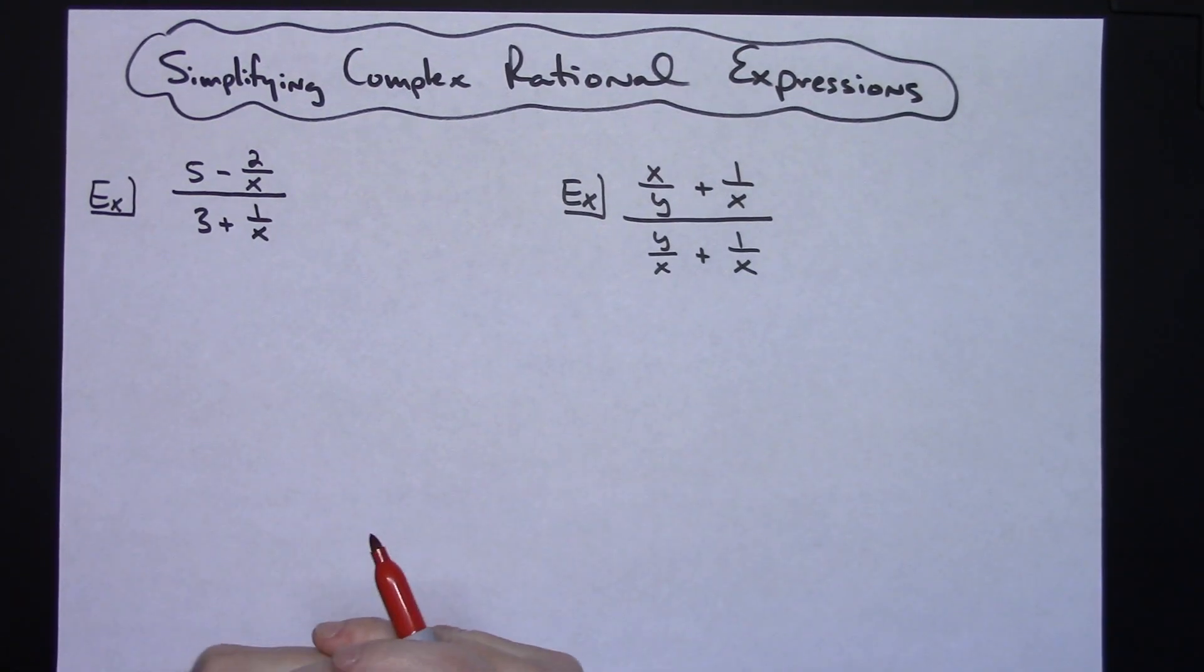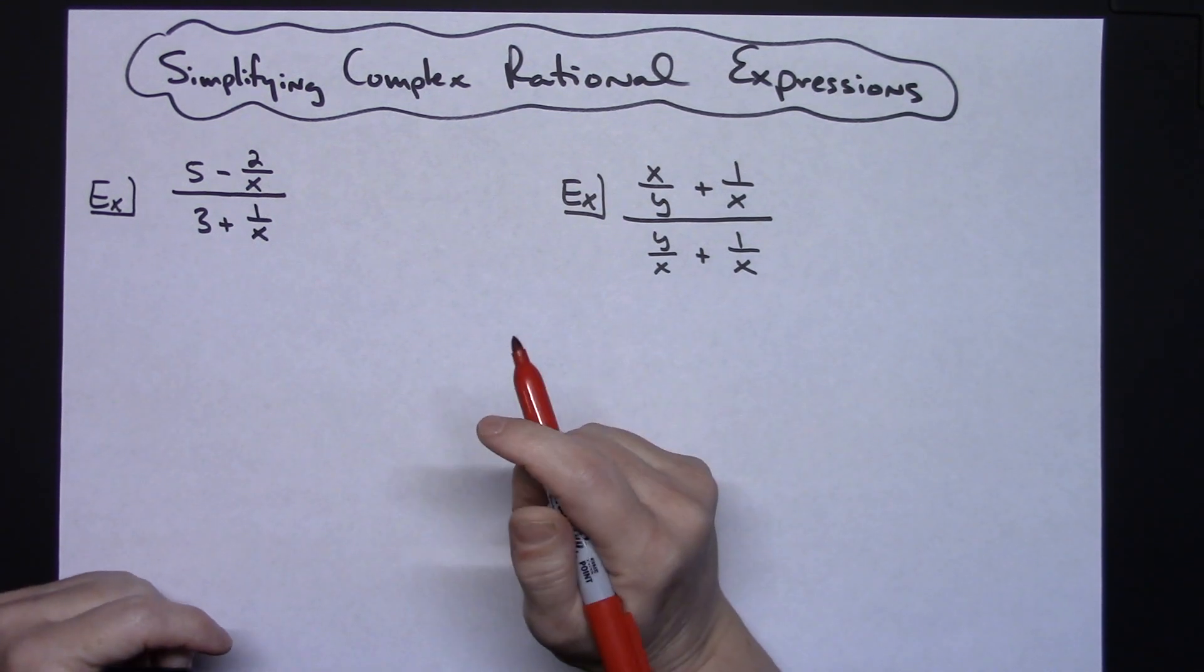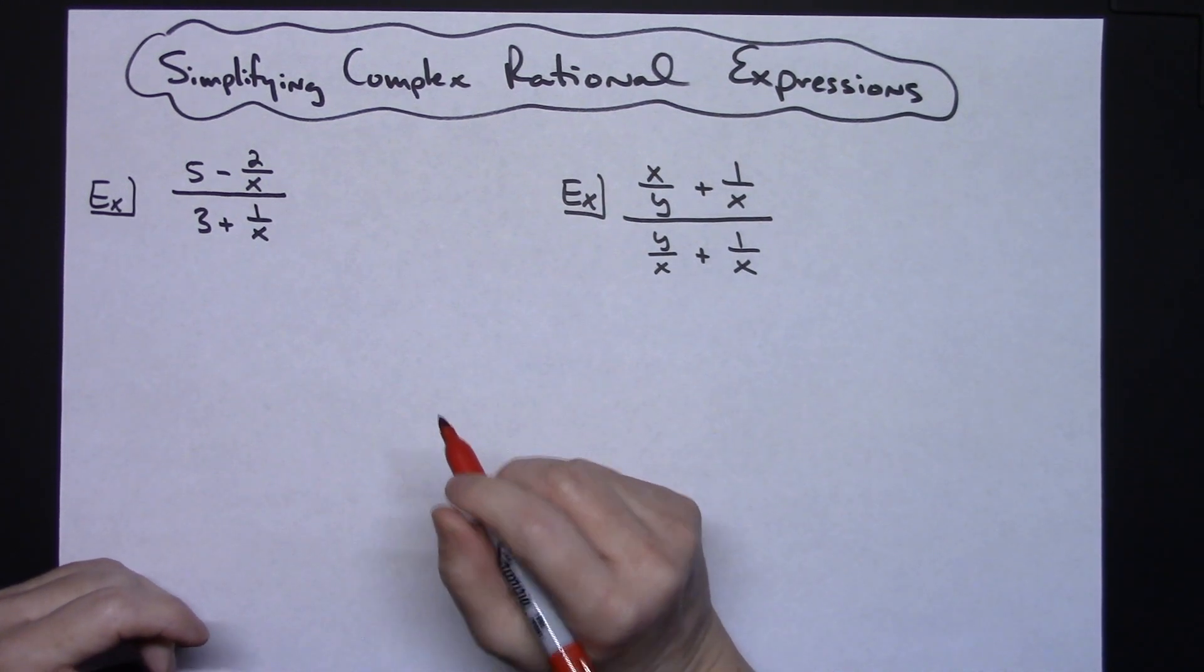In this video I'm going to work out two examples of simplifying a complex rational expression. The method I'm going to choose is multiplying through by the least common denominator.